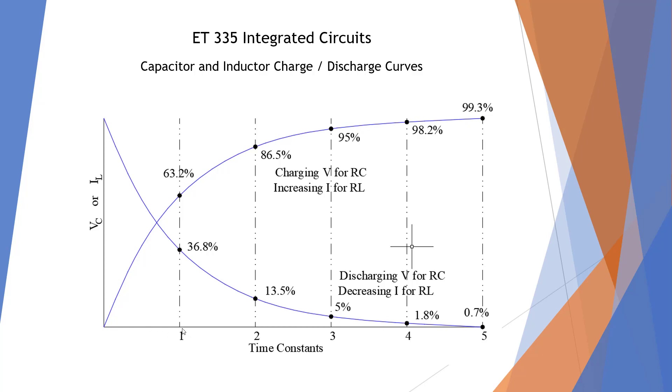So after one time constant, we're going to be at 63.2% of max. At two time constants, we're going to be at 86.5%, which is another 63.2% of the original. So we're going to increase by 63.2% after each time constant.